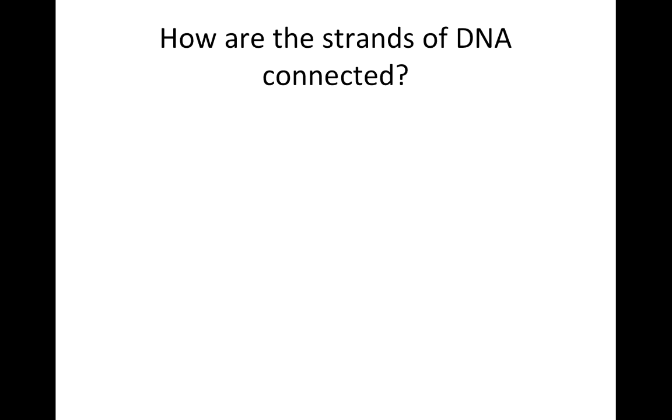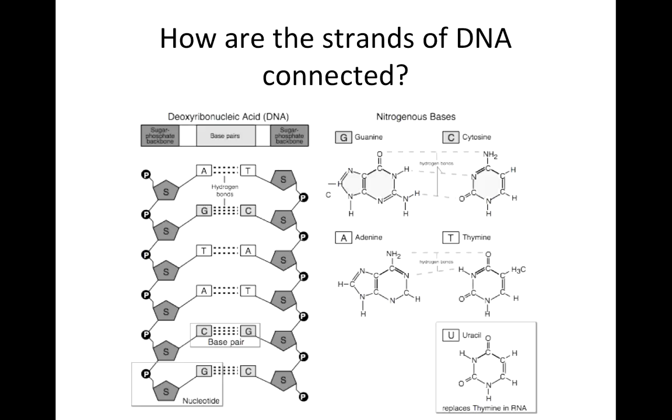As was mentioned earlier, the strands of DNA are connected by hydrogen bonds between the nitrogenous bases. You can see here that A and T are always joined by two hydrogen bonds, while G and C are always joined by three hydrogen bonds.